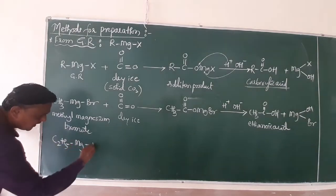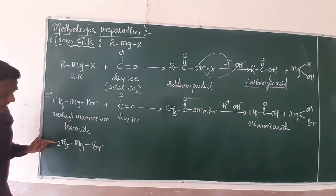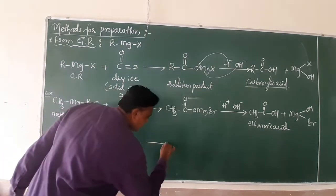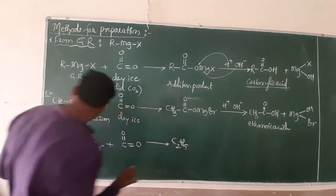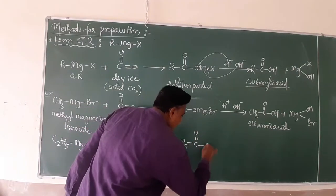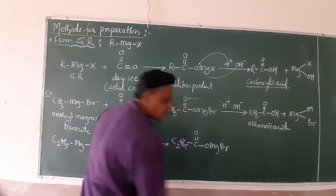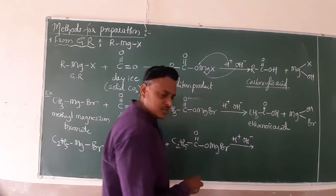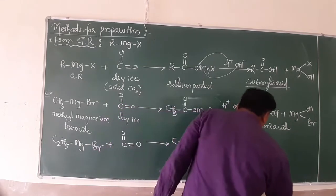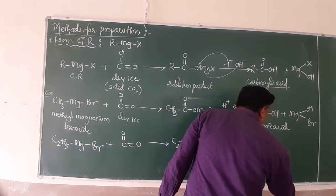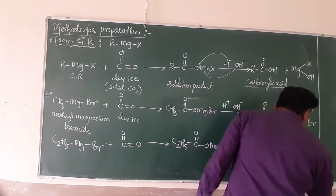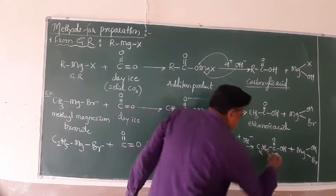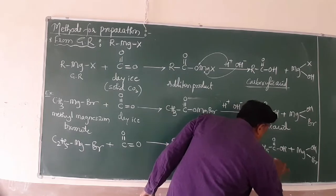You can use different examples for your syllabus. Using C₂H₅MgBr — ethylmagnesium bromide — reacting with CO₂ (dry ice), the addition product is C₂H₅-C double bond O-OMgBr. Which undergoes acid hydrolysis with H⁺ and OH⁻ to give C₂H₅-C double bond O-OH. This is your final carboxylic acid with three carbons — propionic acid. I think all of you know that is propionic acid.